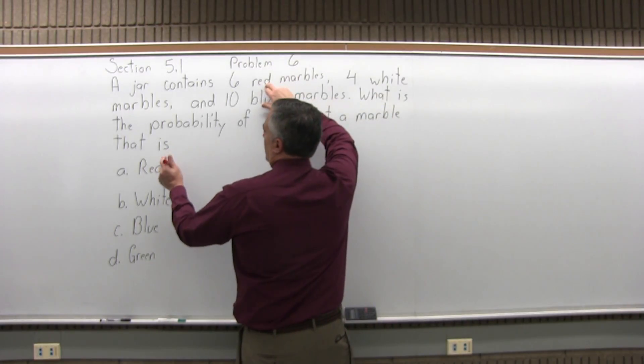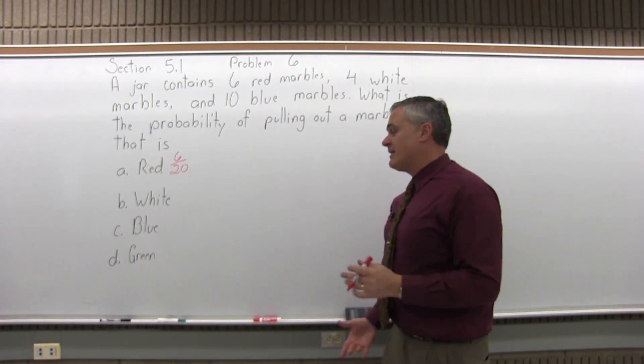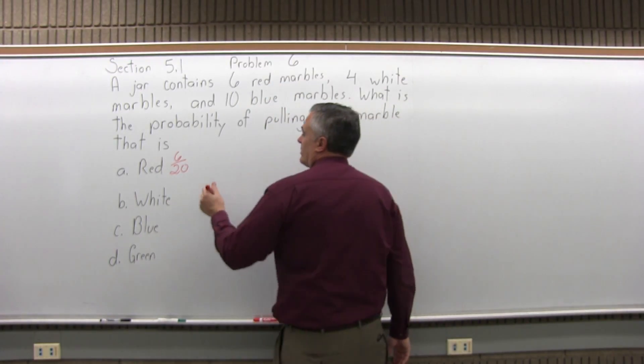So, since 6 of them are red out of 20 altogether, the probability of getting a red marble is 6 over 20. Now again, you could leave it like that as 6 over 20.